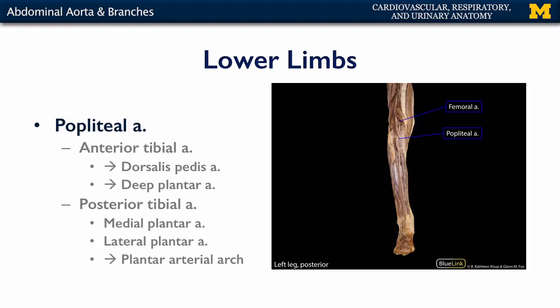Looking at the cadaveric specimen in posterior view, we can see the femoral artery coming out of the adductor hiatus into the popliteal fossa — behind the knee — where it becomes the popliteal artery. The anterior tibial artery is not visible here, but the posterior tibial artery can be seen giving rise to both the medial and lateral plantar arteries, which supply the medial and lateral portions of the foot respectively. We've now covered all the major branches of the abdominal aorta and the tissues they supply. Stay tuned to talk about veins.